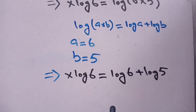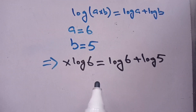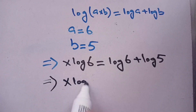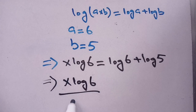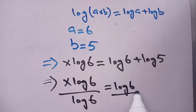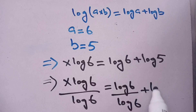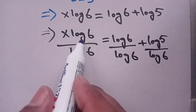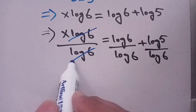In the next step we divide both sides by log of 6. We get: x times log of 6 divided by log of 6 is equal to log of 6 divided by log of 6 plus log of 5 divided by log of 6. Now we can cancel out log of 6 by log of 6.